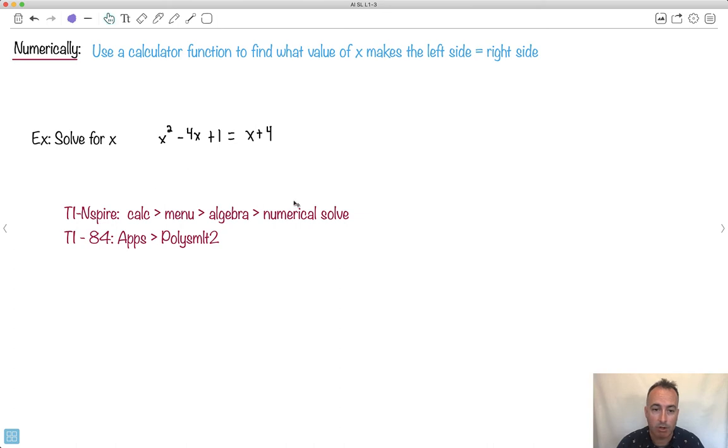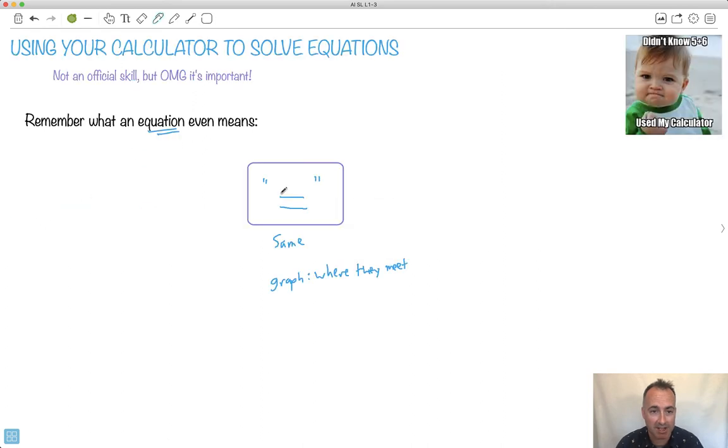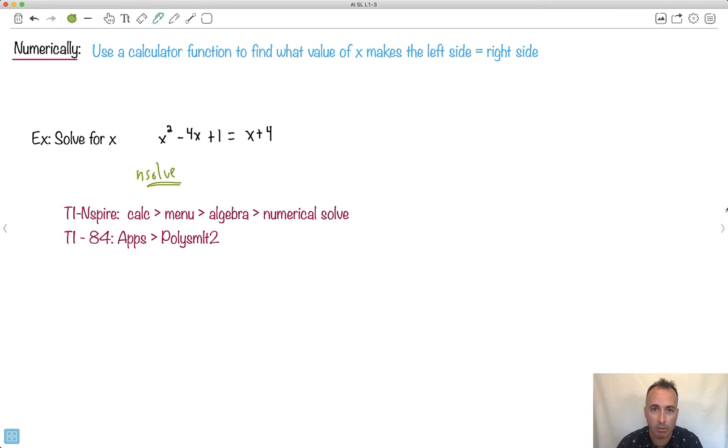So on the TI-inspire, we have something called numerical solve, and it seems like you're cheating, okay? It really does. I'm going to call it nSolve. It's going to seem like the magic solution for everything. There's going to be a but, so to speak. So it's going to seem like that's what you're going to want to use all the time, but I'll tell you why you shouldn't always use it, because it seems like you're totally cheating. Let's actually use the calculator. Let's try to do this.